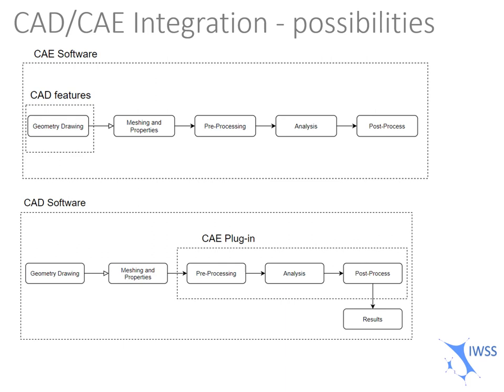This basically can be done in two ways. One, you have a computer-aided engineering-based software like ANSYS or ABAQUS that have CAD features inside it. You also can have computer-aided design-based software like AutoCAD or Rhinoceros where you could retrieve the geometry data and generate plugins that apply computer-aided engineering procedures.